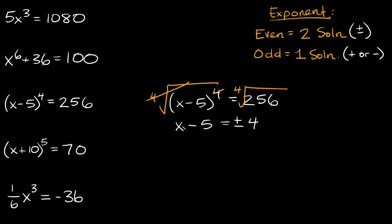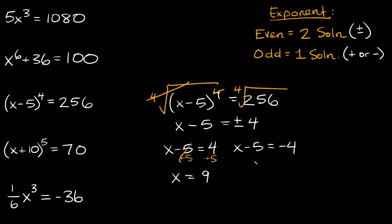We basically have two equations: x minus 5 is equal to positive 4, and x minus 5 is equal to negative 4. Solving for x on the first equation, we add 5 to both sides and get x is equal to 9. On the second equation, we also add 5 to both sides and get x is equal to 1. So we get two solutions: x is equal to 9 and x is equal to 1.